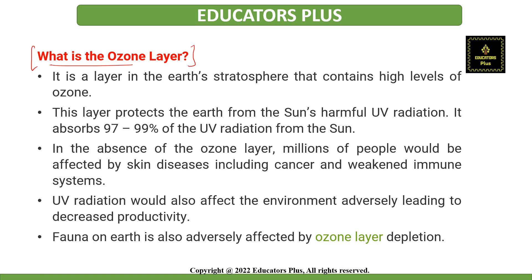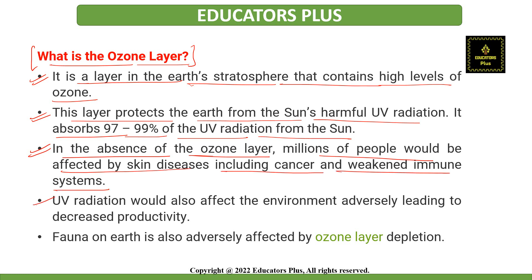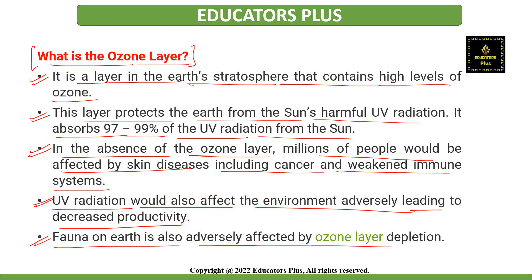The ozone layer is a layer in the Earth's stratosphere that contains a high level of ozone. This layer protects Earth from harmful ultraviolet radiations and absorbs around 97 to 99% of UV radiations from the sun. In the absence of the ozone layer, millions of people would be affected by skin diseases, including cancer and weakened immune systems. UV radiation would also affect the environment adversely, leading to decreased productivity, and fauna on Earth is also adversely affected by ozone layer depletion. Hence, protection of the ozone layer is a must.